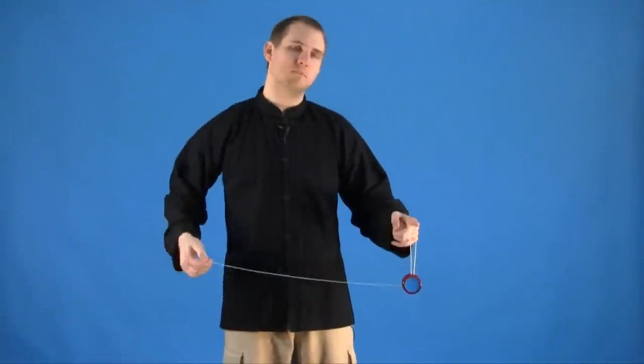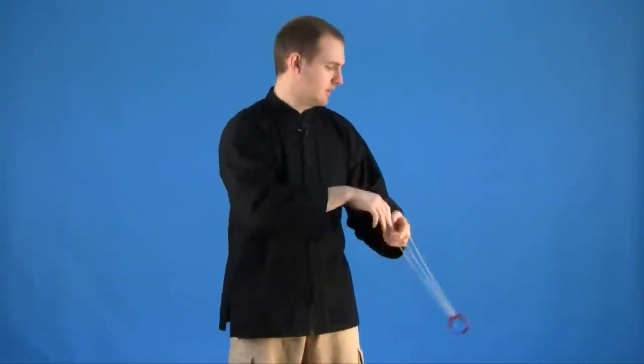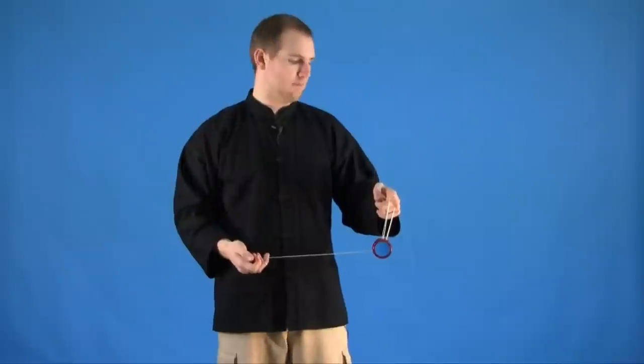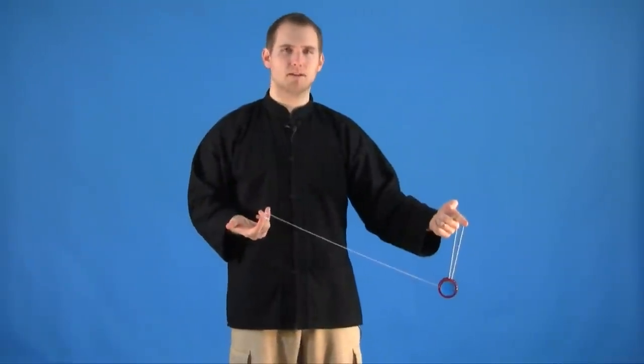So to start, throw your trapeze and we're going to do a couple forward rolls and land into a double trapeze and flip off. You're right back into your trapeze.